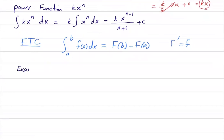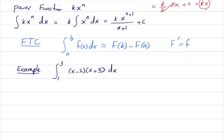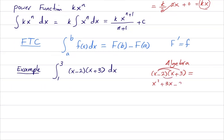One example: the integral of (x minus 2) times (x plus 3) dx, with x ranging from 1 to 3. To calculate this integral, we have to do a little algebra first. Since we have two binomials, we do the multiplication: x minus 2 times x plus 3 equals x squared plus 3x minus 2x minus 6, or x squared plus x minus 6.